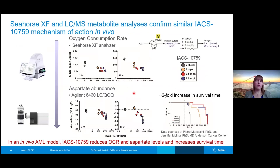This study can also be done in vivo. Some acute myeloid leukemia cells were injected into mice, and the mice were treated with vehicle or different levels of the IACS compound. Cells taken from these mice that had the IACS treatment again had lower oxygen consumption rates. With the IACS treatment, looking at aspartate levels from samples collected from these animals, in the animals treated with higher doses of IACS there was a reduction in the levels of aspartate in the whole animal — so this is having an impact on the whole organism. Looking at survival time, the researchers found that the IACS treatment does increase survival time, with the highest doses about doubling survival time.